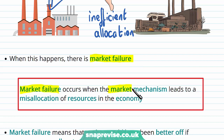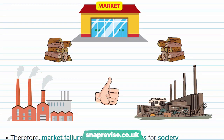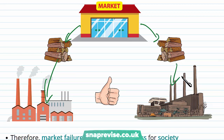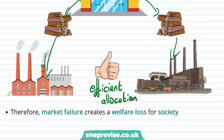A situation in which we observe an inefficient allocation of resources is described as market failure. Market failure occurs when the market mechanism leads to a misallocation of resources in the economy. Market failure means that society could have been better off if resources were allocated in a different way — almost as if they were allocated the way the market should have been. Resources in an economy could have been used in a more productive manner, more beneficial for society. In general, we can conclude that market failure creates a welfare loss for society.